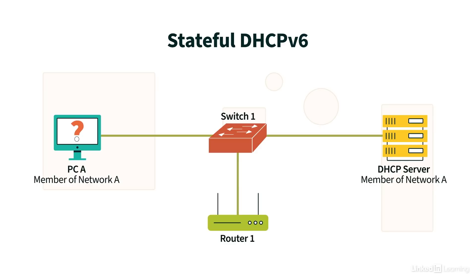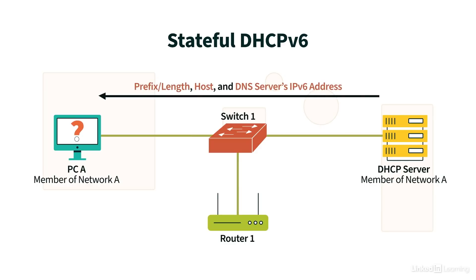Let's take a look at stateful DHCPv6 servers. The DHCPv6 server provides all of the information that PCA needs — specifically, prefix length information and host information. The prefix length identifies the network portion of the IPv6 address, and the host information is the host portion of that address. The server can also provide optional information, such as the address of an IPv6 DNS server.